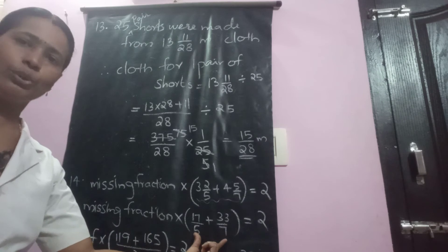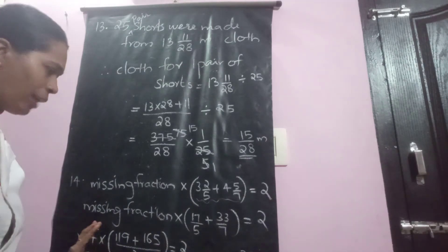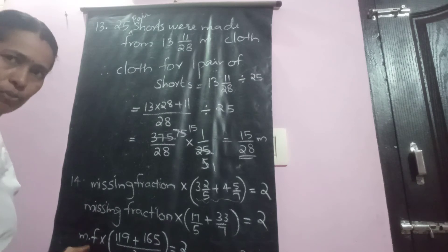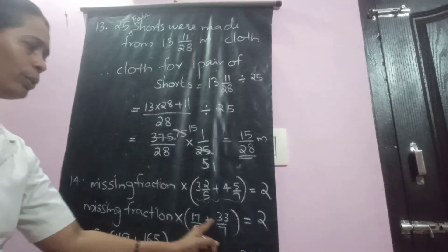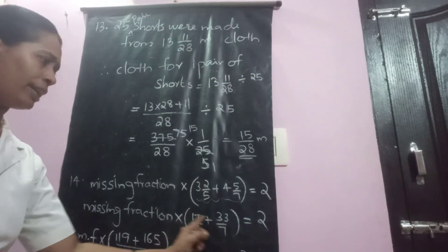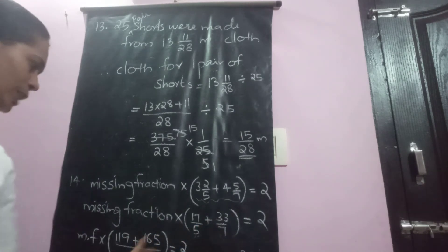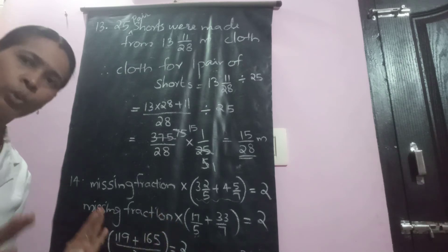First you add this using cross multiplication. Missing fraction you leave it and write it there itself. Missing fraction, shortly MF, into... I am using cross multiplication rule: 17 into 7 is 119, 5 into 33 is 165, denominator is 5 into 7 which is 35. Equal to 2 itself, no change.